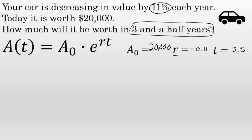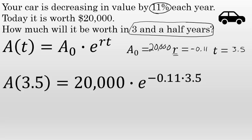Now I'll substitute each of these three values into the equation: for A sub zero, 20,000; for the rate, -0.11; and for time, 3.5.